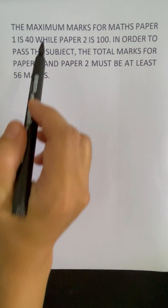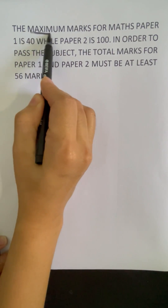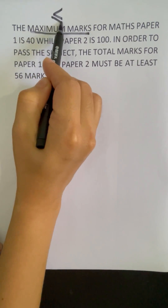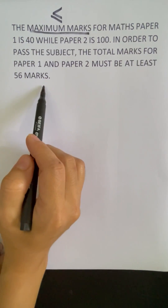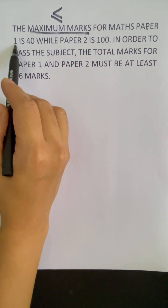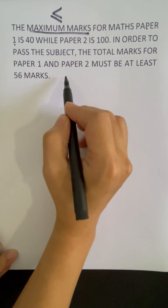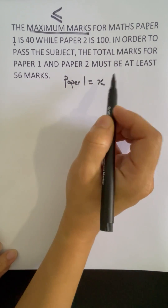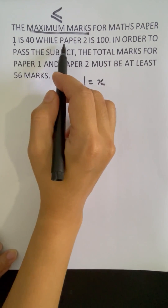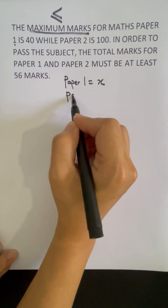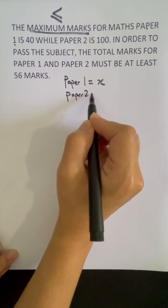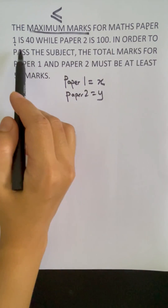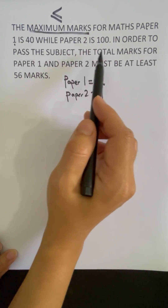Let's try the first question. The word 'maximum marks' means we need to use the less than or equals to symbol. For maths, paper 1 has a maximum of 40 marks, so I'm going to represent paper 1 as X. Paper 2 has a maximum of 100 marks, so paper 2 will be Y. This will be easier for us to write the linear inequalities.